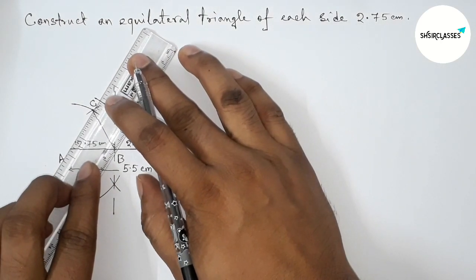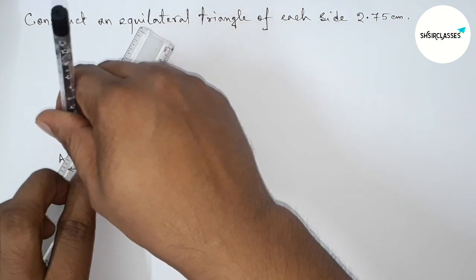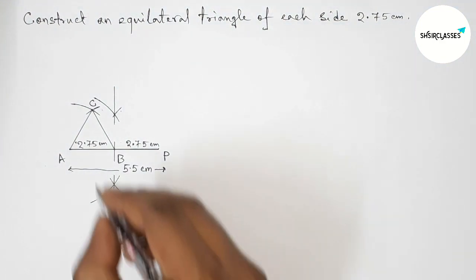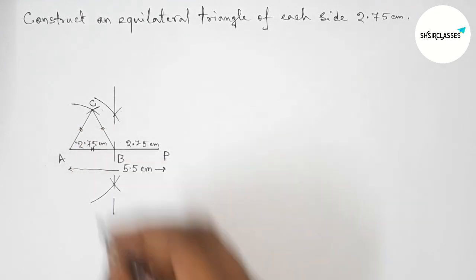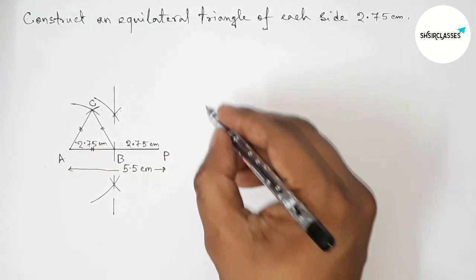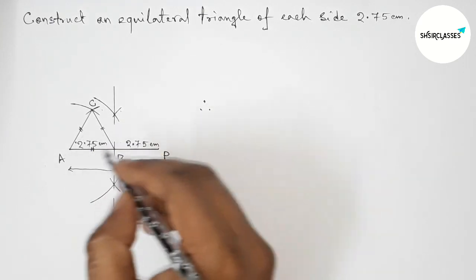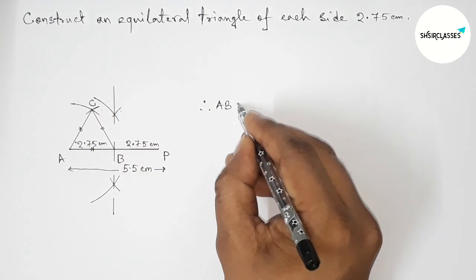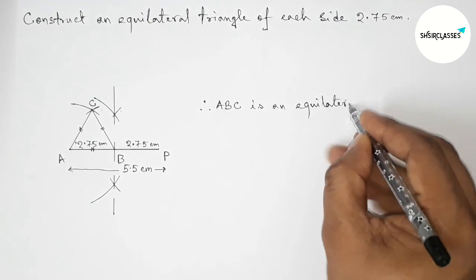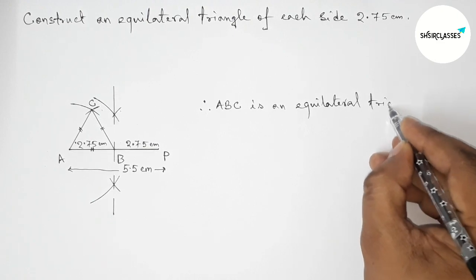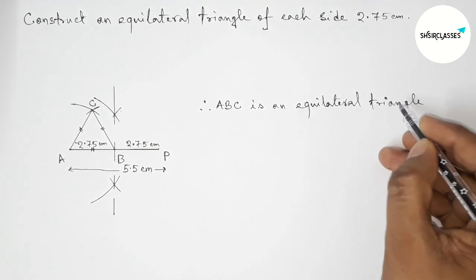Then joining A and C to get the equilateral triangle. We know that all the sides of an equilateral triangle are equal. Therefore, ABC is an equilateral triangle of each side 2.75 centimeters.